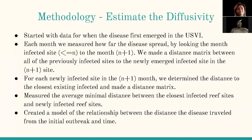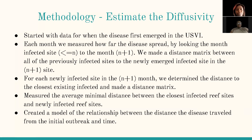The methodology used to estimate the diffusivity was to first start with the data from when the disease first emerged in the U.S. VI. Then each month we measured how far the disease spread by looking at the initial month when an infected site first emerged, represented by N, to the following month, represented by N plus 1. We then made a distance matrix between all previously infected sites and the newly emerged infected sites in the N plus 1 month, determining the distance to the closest existing infected site.